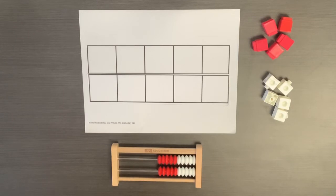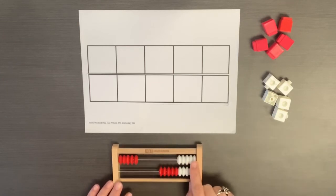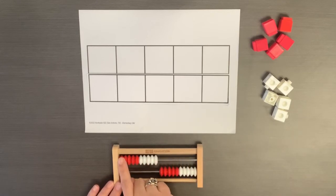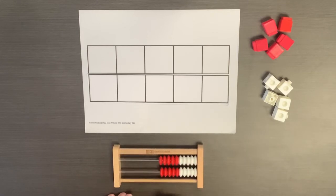Rekenreks consist of rows of 10 beads. Each row is made of 5 red beads and 5 white beads. This allows students to make mental images of numbers.